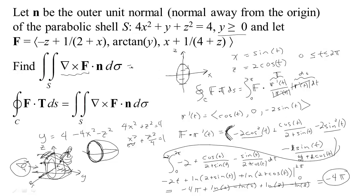So we found that the flux of the curl is −4π, but we never set up a surface integral — we just did a circulation integral. And the reason we could do that was because of Stokes' theorem.